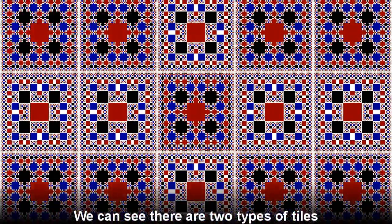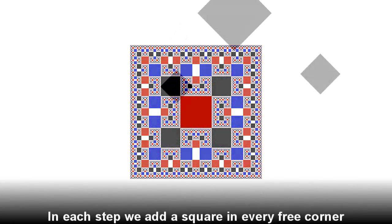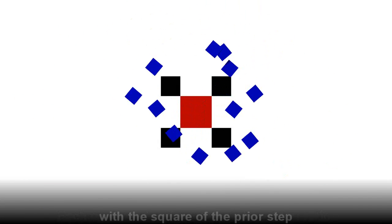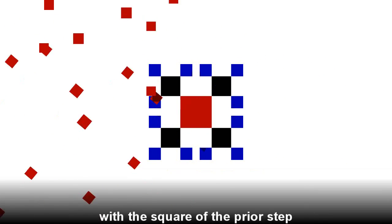We can see that there are two types of tiles. Let's see how the tile on the right is built. In each step we add a square in every free corner. Each square of a given step is in golden ratio with the square of the prior step.